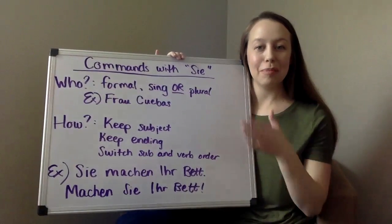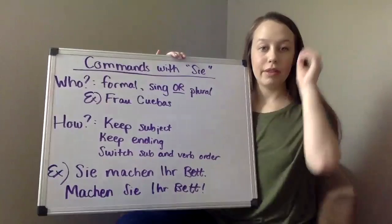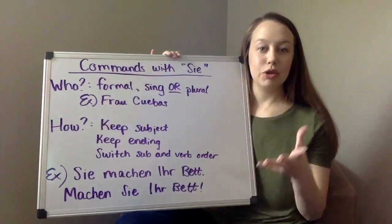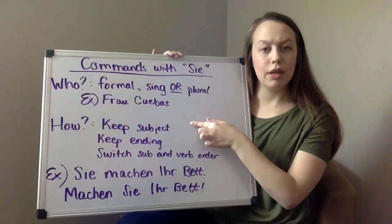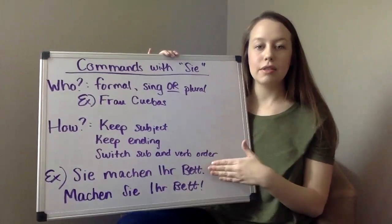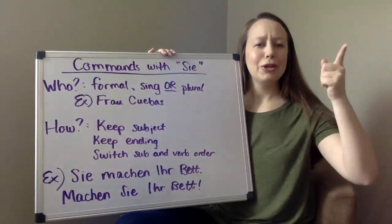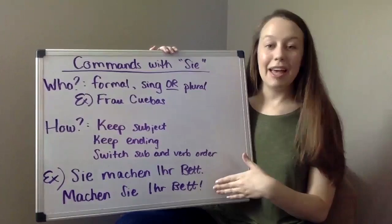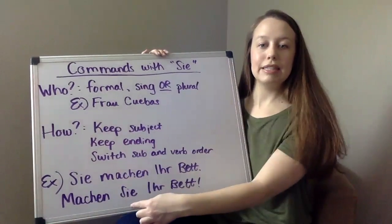Now let's talk about 'Sie.' To remind you: it's formal — strangers, elders, people of authority — and can be singular or plural. Our example is me, your teacher, Frau Cuevas. This one's a little different: we keep the subject, we keep the ending, and then we switch the subject and verb — verb comes first, then subject. So the regular sentence is 'Sie machen ihr Bett'; the command is just 'Machen Sie ihr Bett' — make your bed. You switch the order of those two.